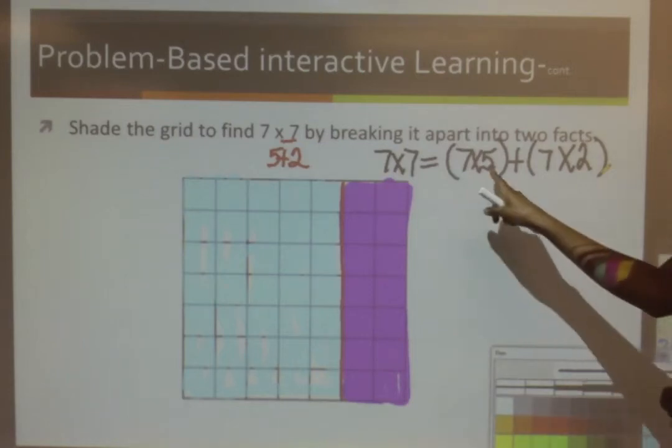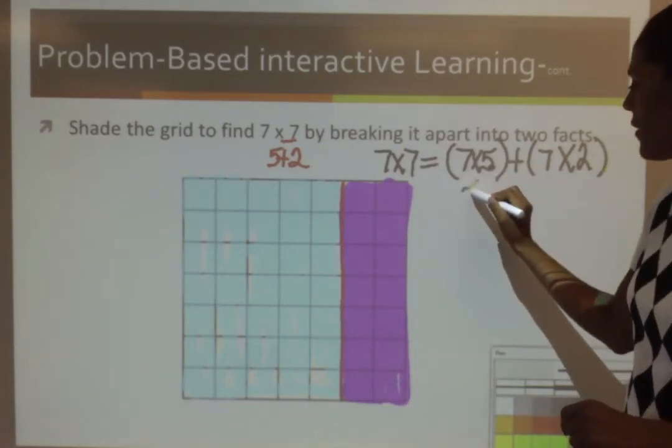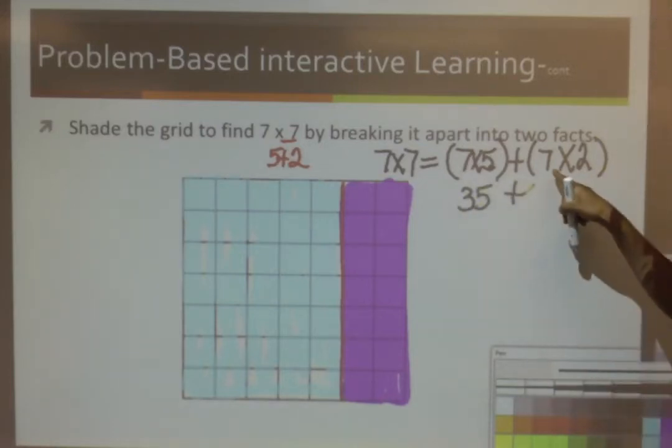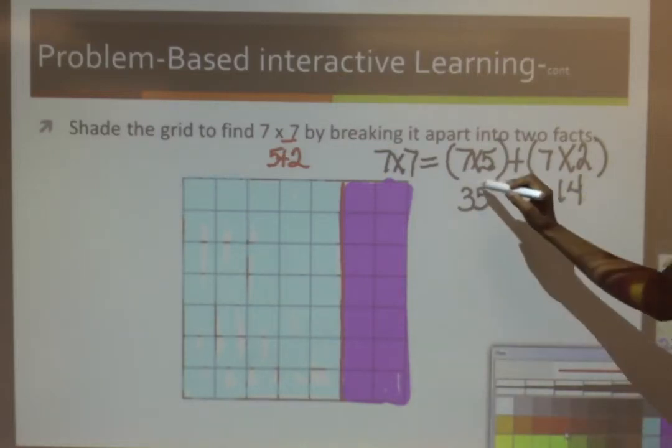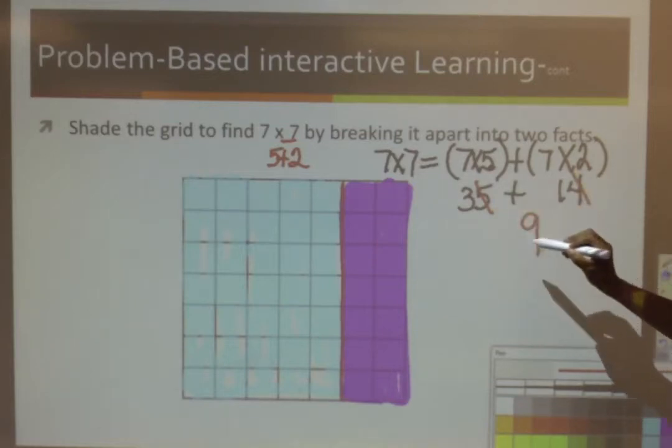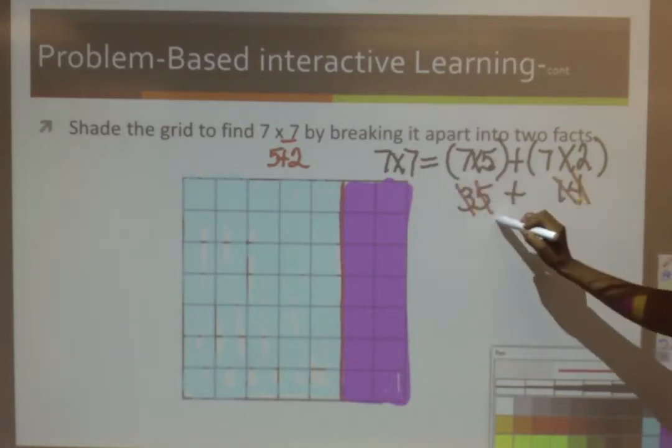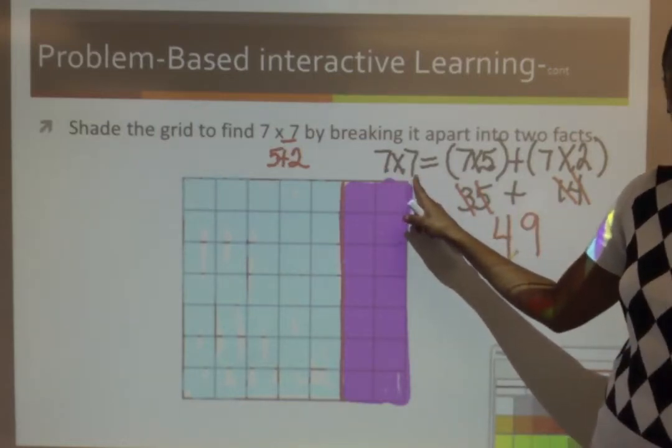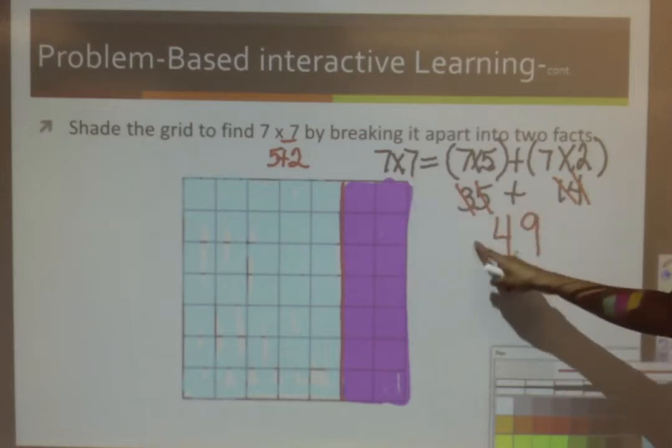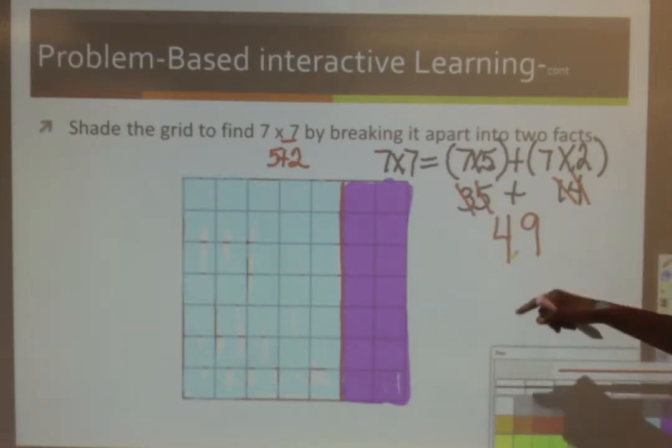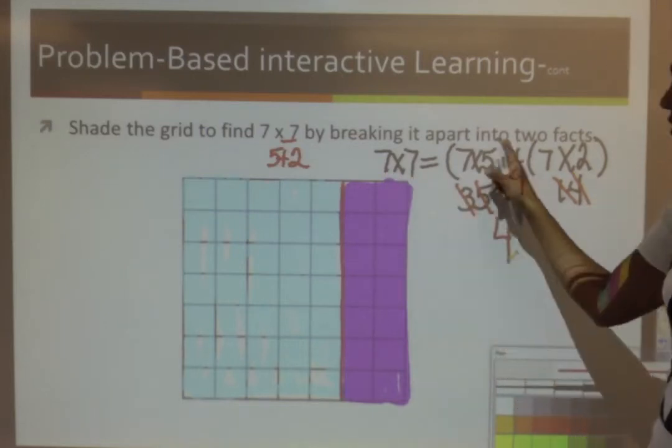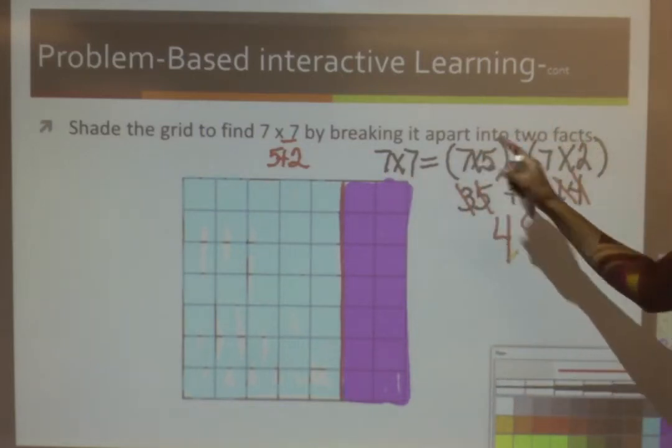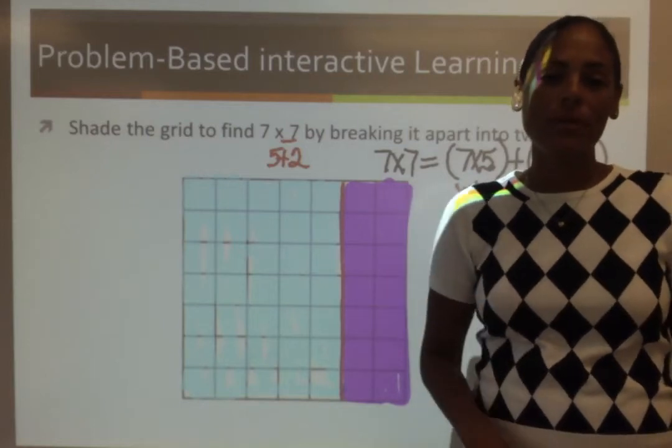Now, if I do this problem out, 7 times 5, I get 35 plus 7 times 2 is 14. Now, I'm going to add this together. 5 and 4 is 9 and 3 and 1 is 4. So, 7 times 7 is 49 and that's what I got over here. So, if you don't know 7 times 7, using the distributive property is an easy way to remember that fact.